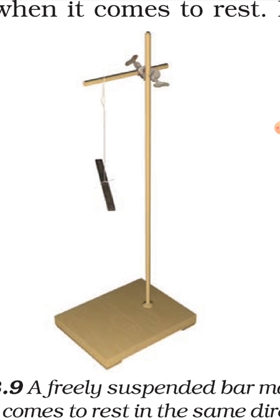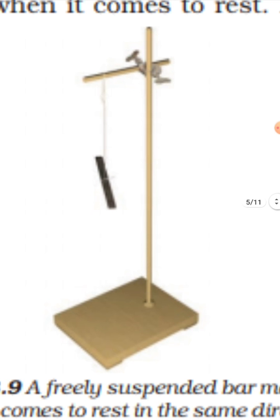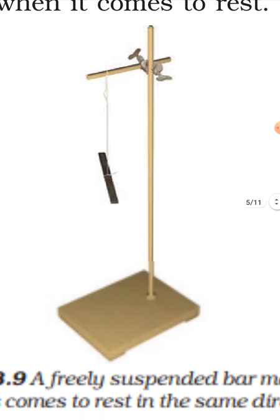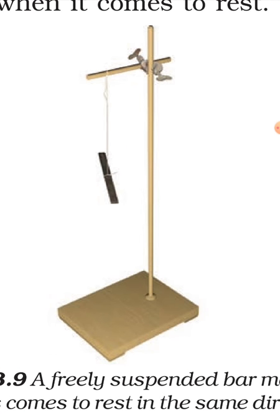And the other end that points towards the south is called the south-seeking end or the south pole of the magnet. All magnets have two poles, whatever their shape. Usually north and south poles are marked on the magnets. You know this point. We already discussed this one.